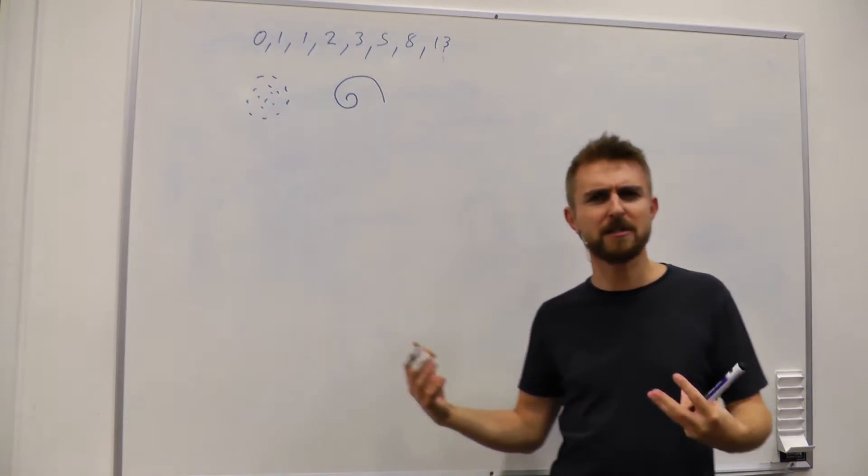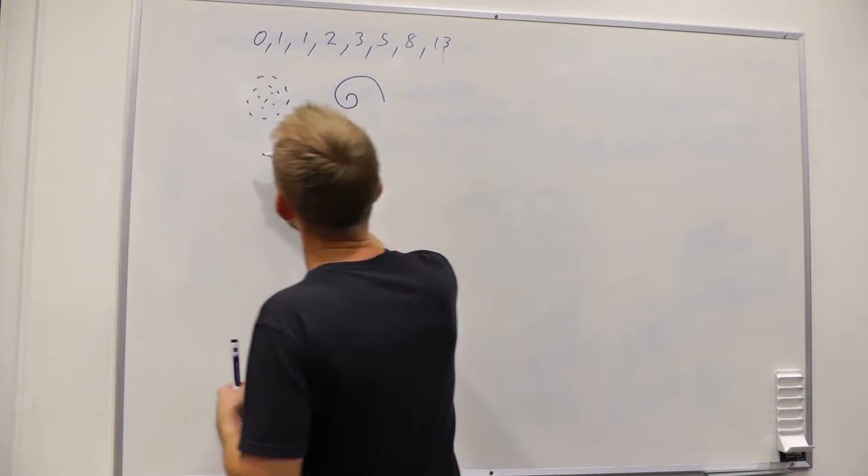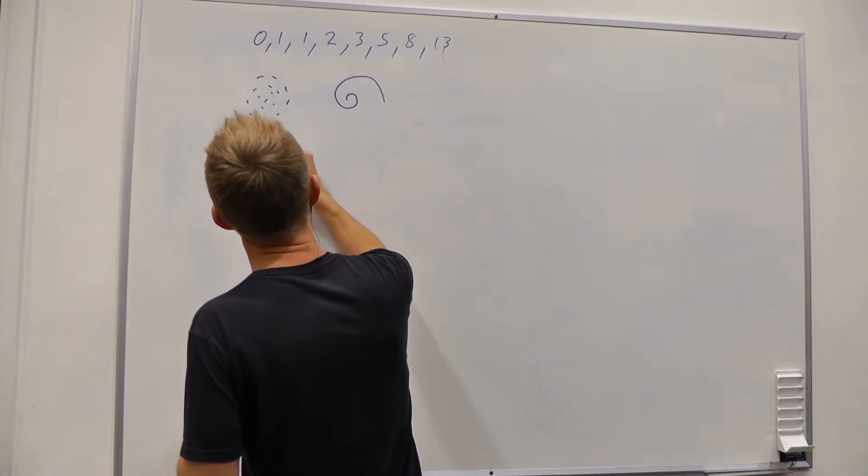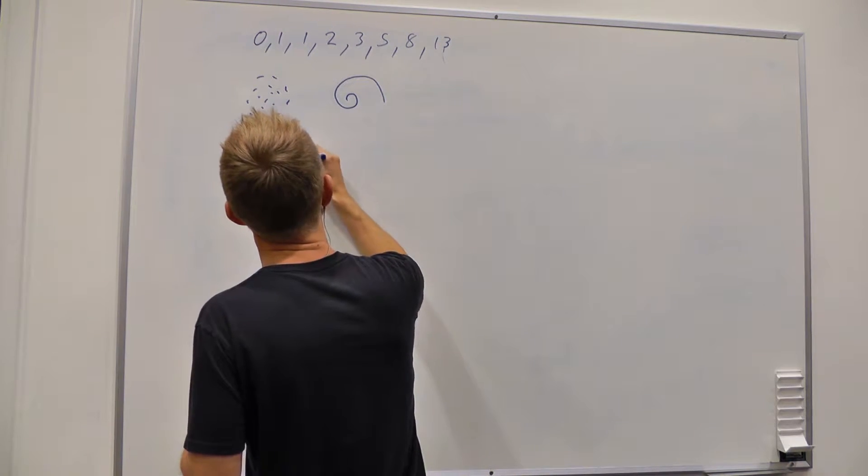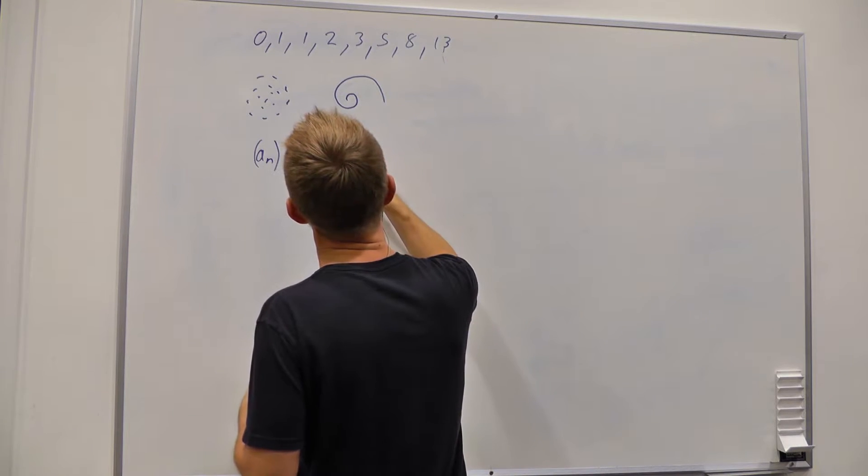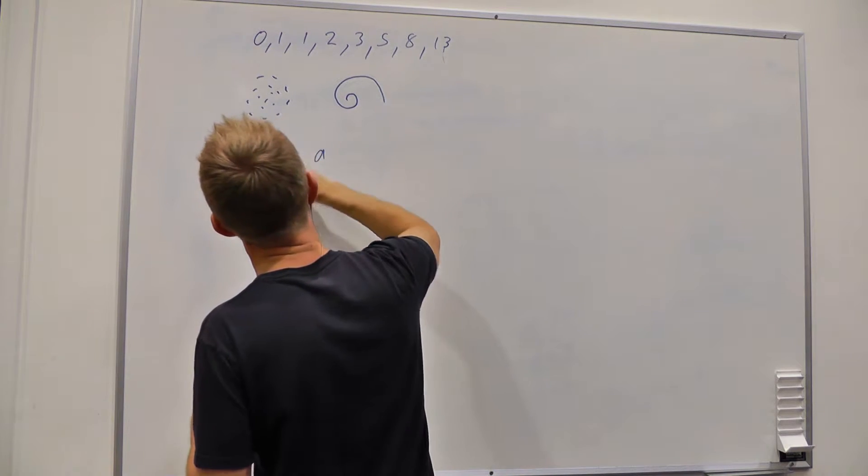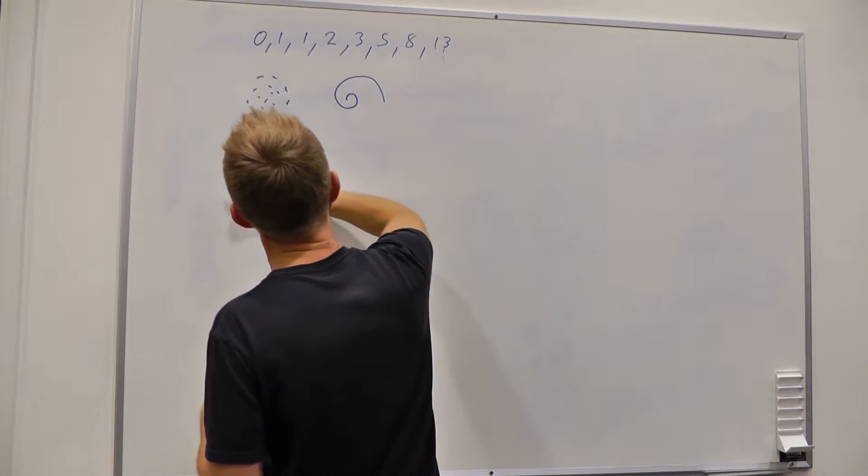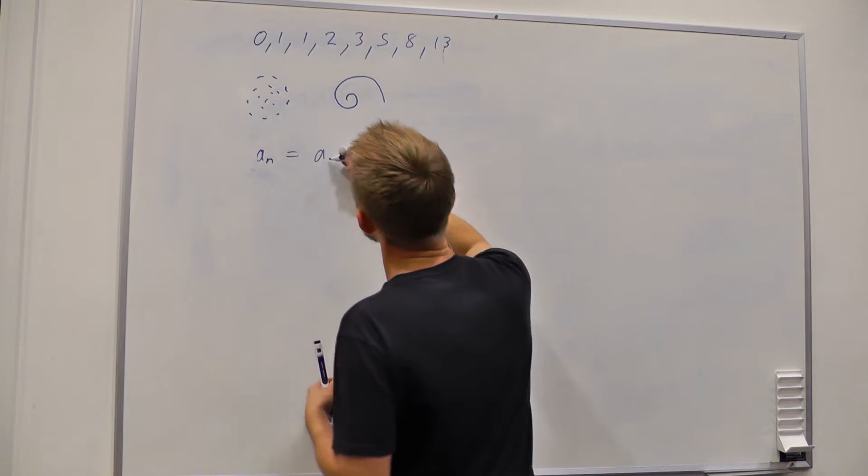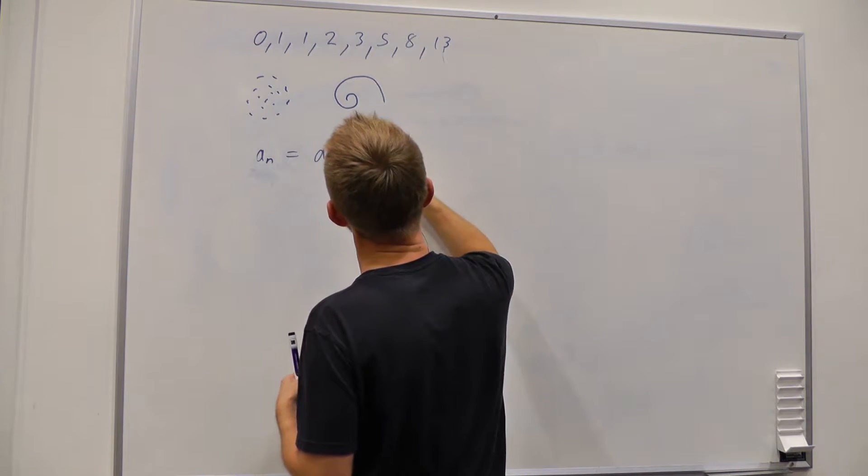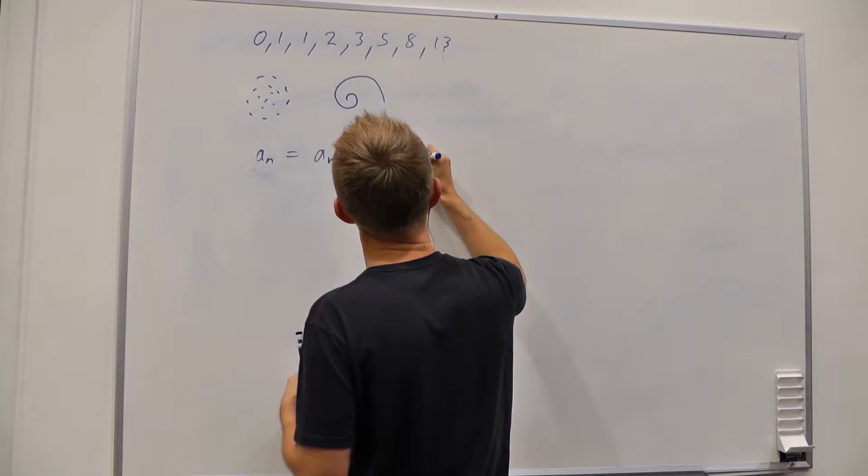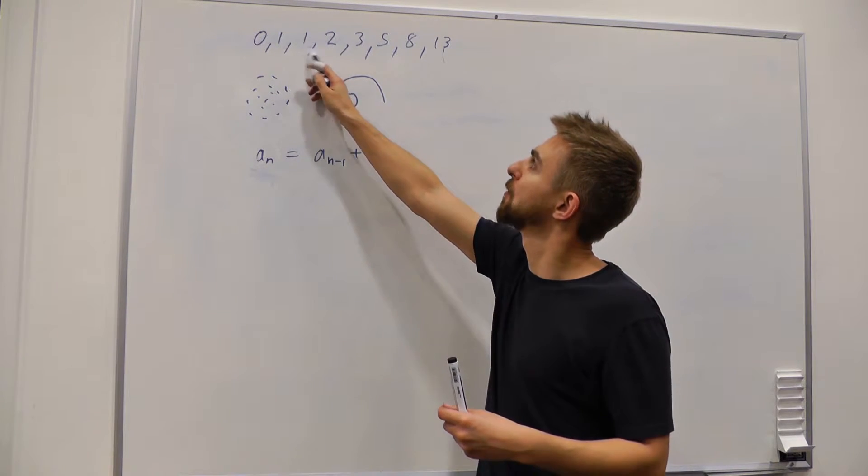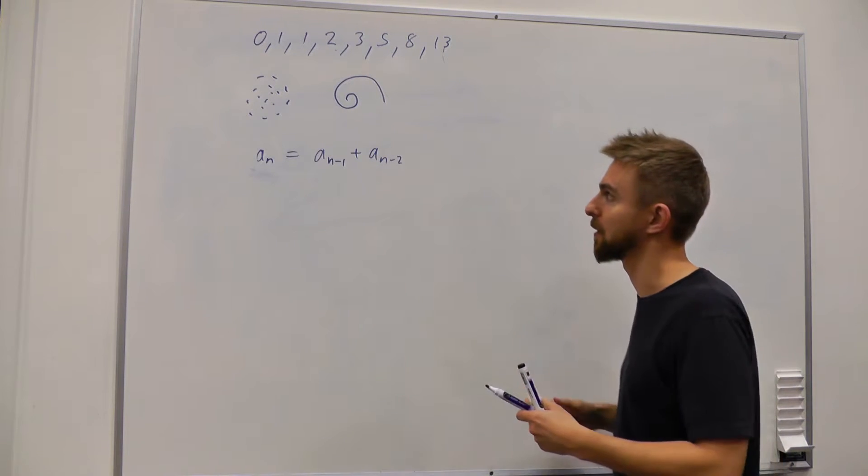Okay, there is a more succinct way of writing down this series, this sequence which would be an equals the term before, oh sorry, the nth term in this series is going to be the sum of the term before and the term before that. So 1 plus 1 is 2, 1 plus 2 is 3, and so on.